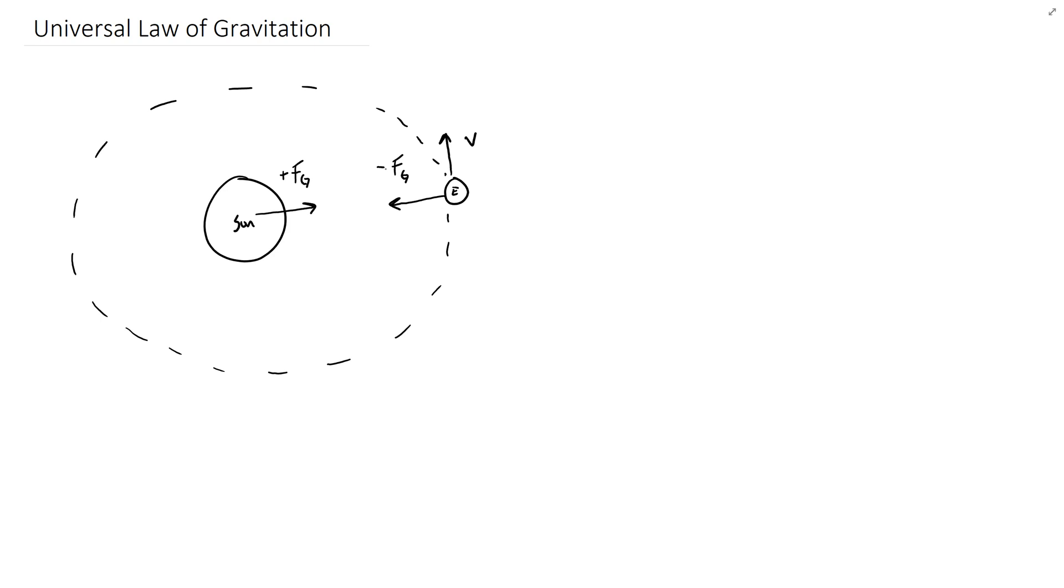Now Isaac Newton was so precise that he was able to say this force of gravity between orbiting planets and their center objects is proportional to the product of their masses. So this would be the mass of the Sun and the mass of the Earth, divided by the distance between their centers, which we'll call R, squared. We should make a note to say this is R. This is a really important relationship, and we use this to understand the universal law of gravitation.